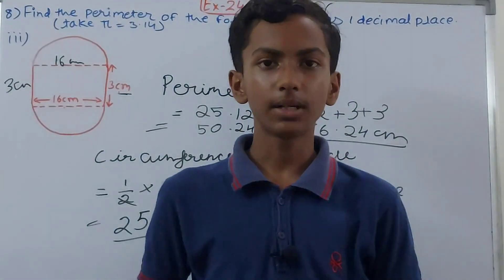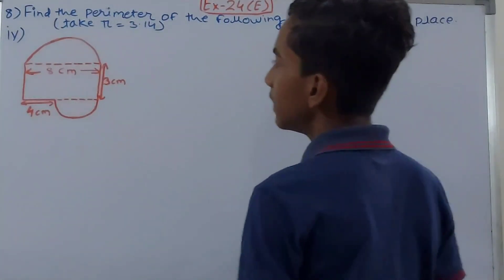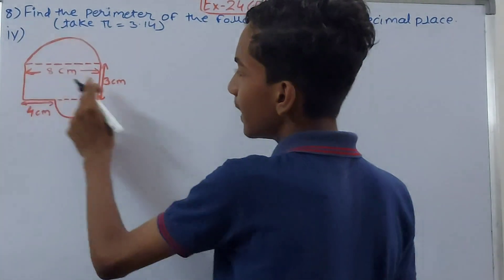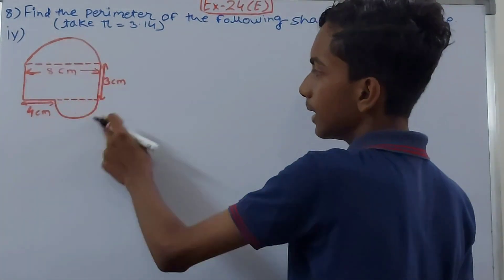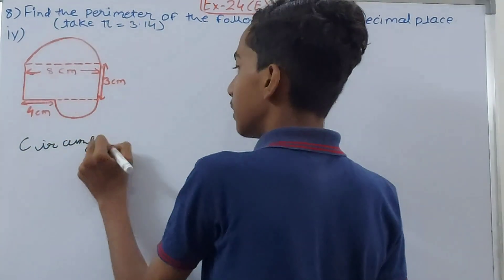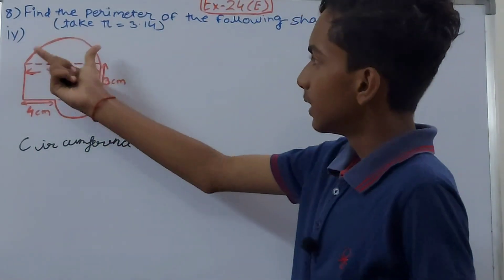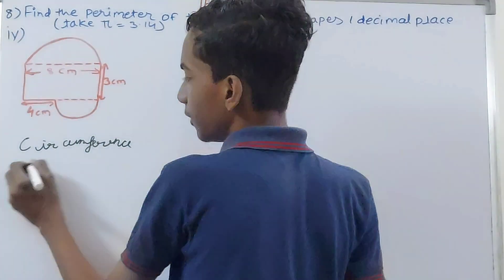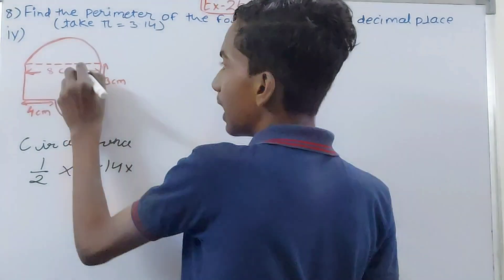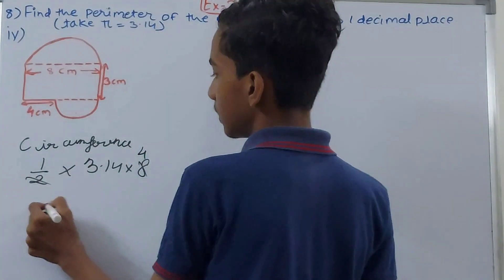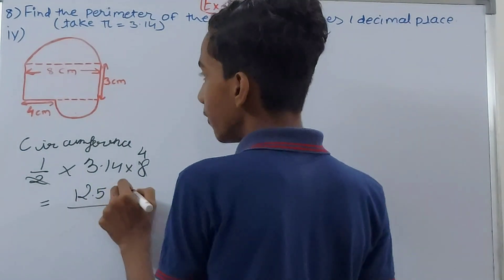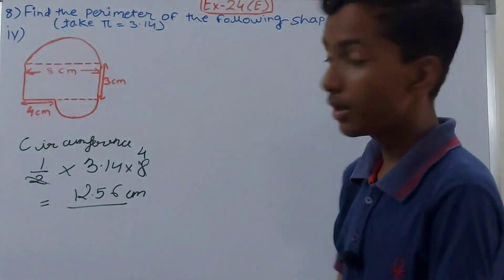Now the next figure has one large semicircle, one smaller semicircle, and a rectangle. The perimeter includes two straight sides of the rectangle, plus both semicircle curves. The first semicircle has diameter 8, so its circumference = 1/2 × 3.14 × 8 = 12.56 centimeters.